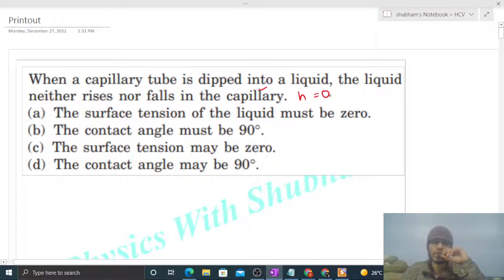And height of the liquid in the capillary tube is nothing but 2T cos theta divided by rho rg, that is given zero. It means either T is equal to zero or cos theta is equal to zero.